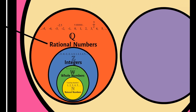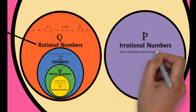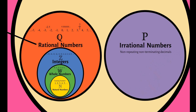Next classification of numbers are irrational numbers. Hindi ito included sa rational numbers, so isi-separate natin siya. Irrational numbers are often denoted as this symbol. Ito ay ang kabaliktaran ng rational numbers — ito ay ang mga numbers na hindi pwedeng i-convert into fractions. These are numbers like non-repeating, non-terminating decimals — ito ay mga decimals na infinite pero walang pattern na digits ang umuulit.